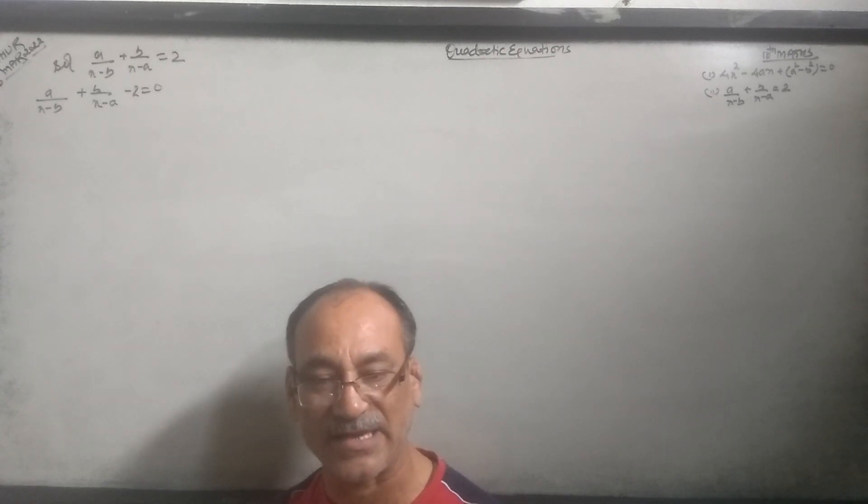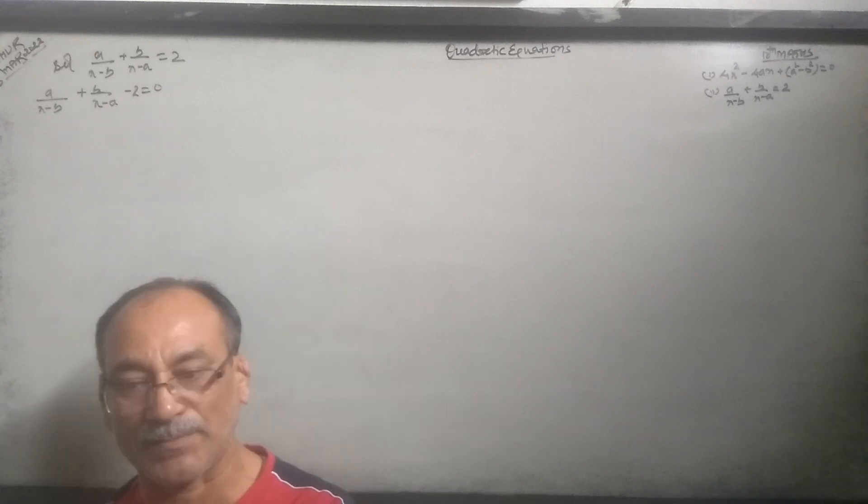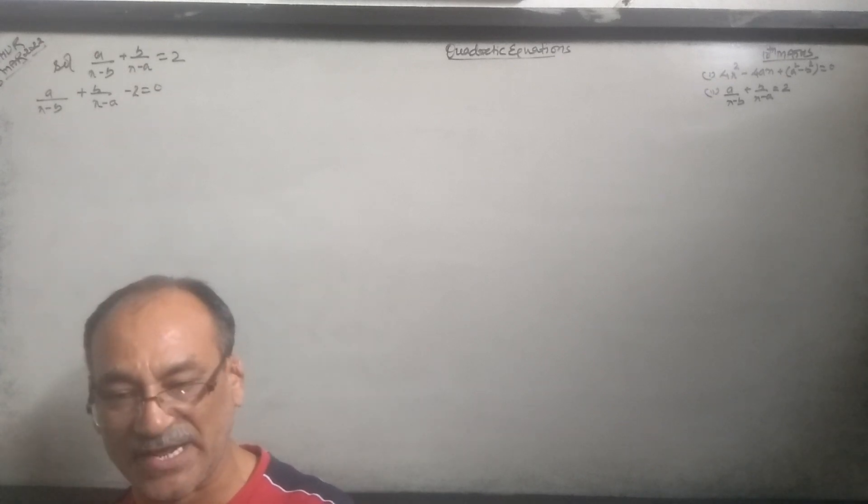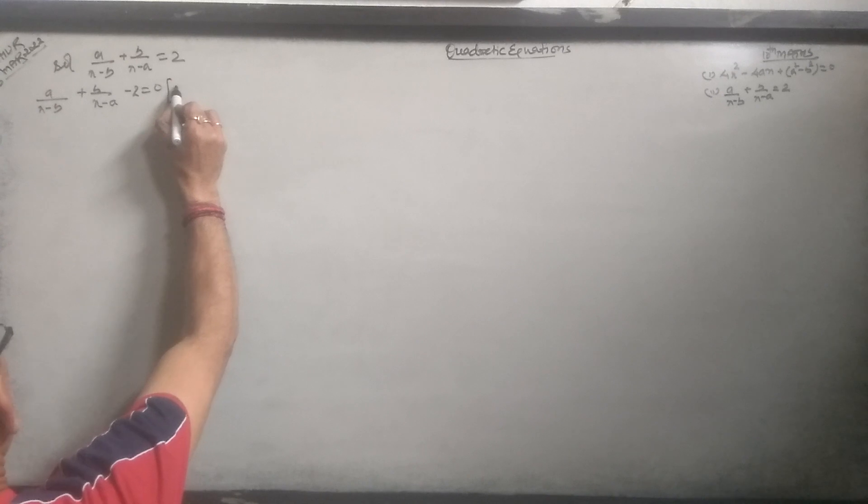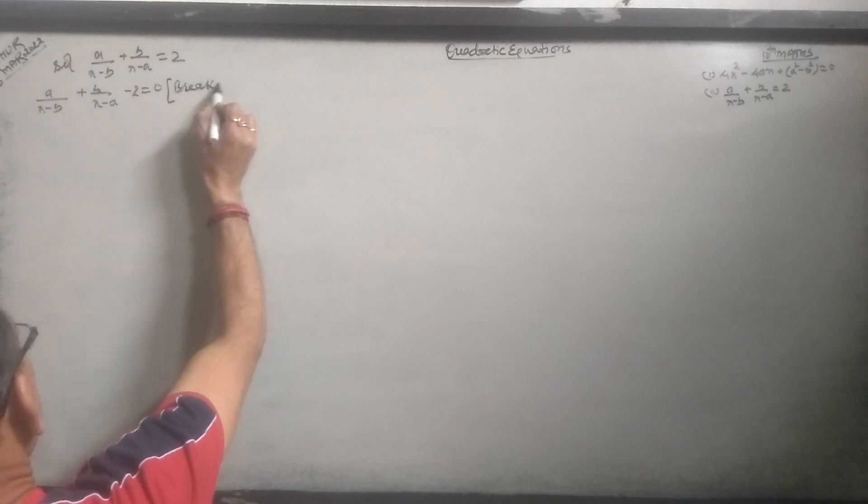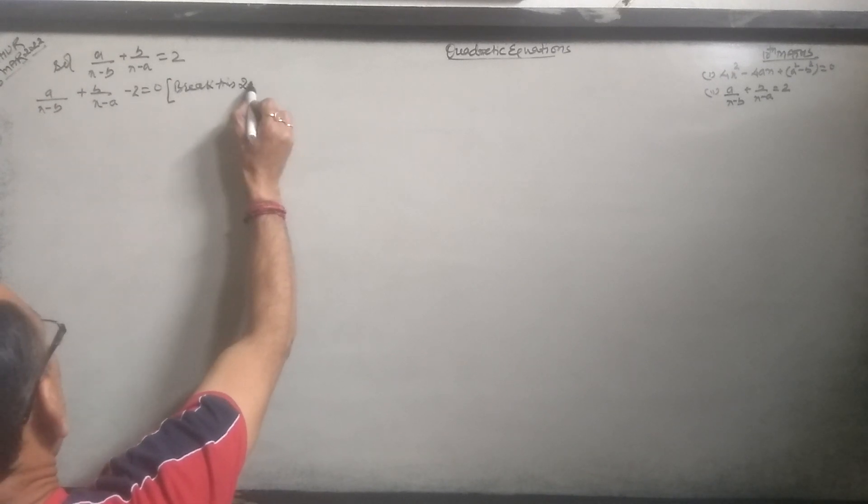a over x minus b, plus b over x minus a, minus 2 equals 0. A over x minus b, minus 1, plus b over x minus a, minus 1 is equal to 0.